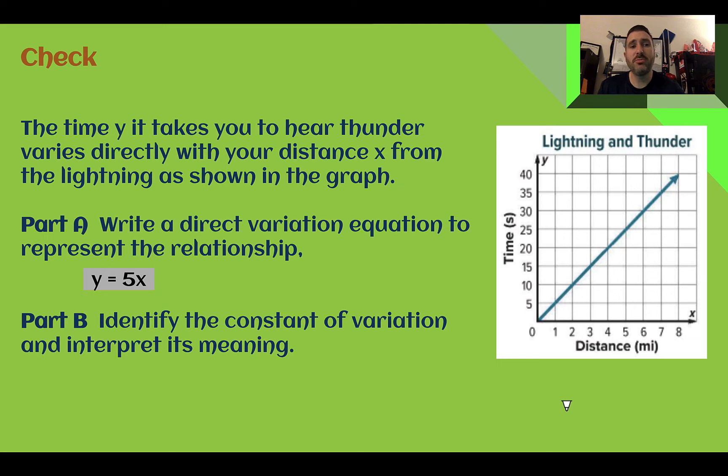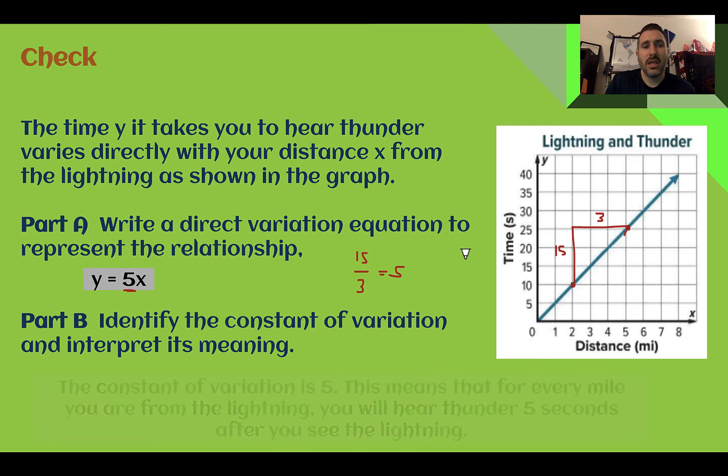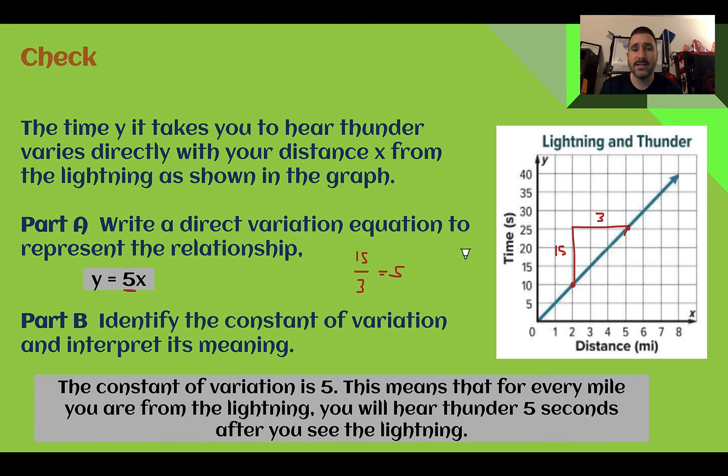Check your answer. First, your direct variation equation should be y equals 5x. If we find the slope, so I'm just going to choose a couple points here, not necessarily right next to each other. We learned in the last lesson, slope triangles, any triangle will work. So 10 to 25 went up 15, 2 to 5 was 3, so 15 divided by 3, that was my rise over my run, is 5. So I've replaced m with 5. What's our constant of variation? It was 5, that was our slope. What does it mean in this context? Every mile that you go farther away, that's what the distance is that's increasing, the time goes up by 5 seconds. So, every mile farther, it's going to take you 5 seconds longer to hear the thunder after you see the lightning.